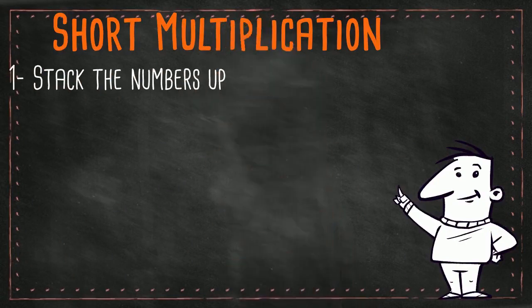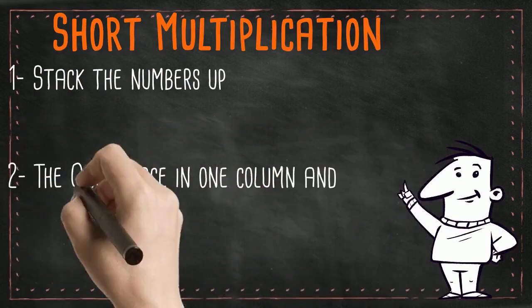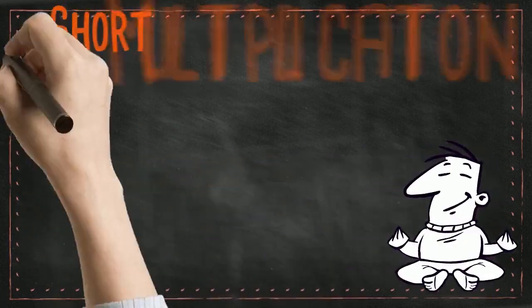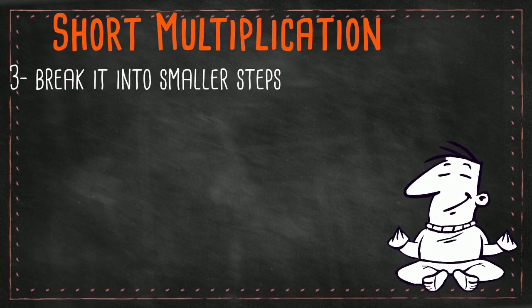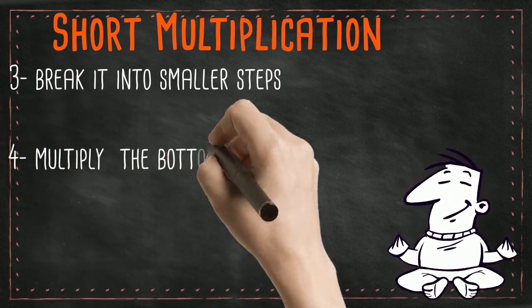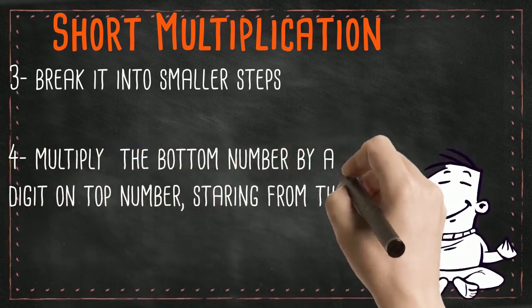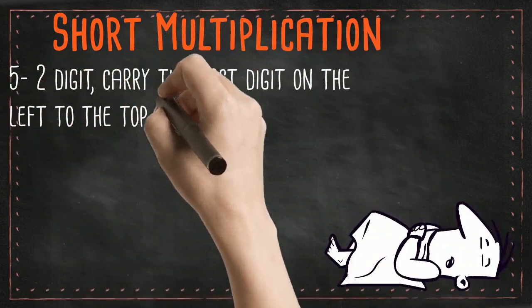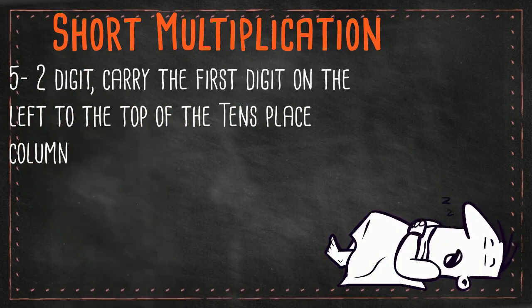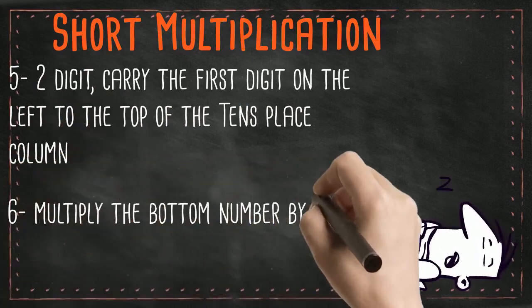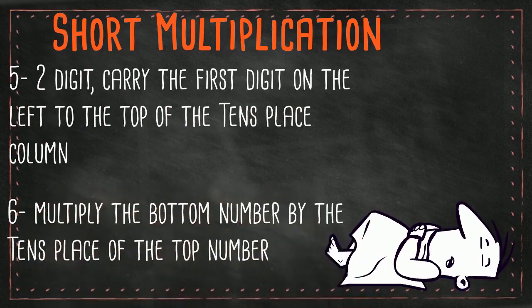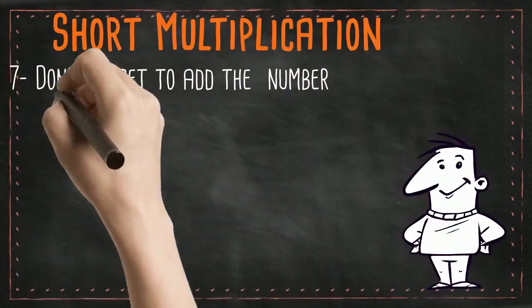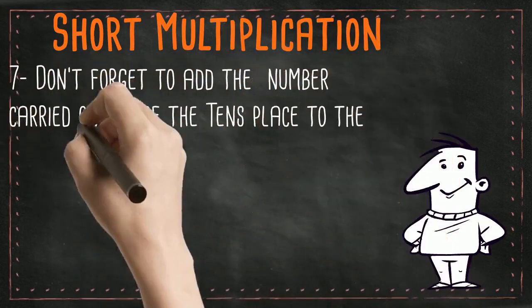Now let's review how to complete a short multiplication. First, stack the numbers up, making sure the ones places are in one column and the tens places are in one column. Then break your bigger problem into smaller steps. Start by multiplying the bottom number by the ones place digit of the top number. If you get a two-digit answer, carry the first digit on the left to the top of the tens place column. Then multiply the bottom number by the tens place digit, and don't forget to add the carried number to your answer.